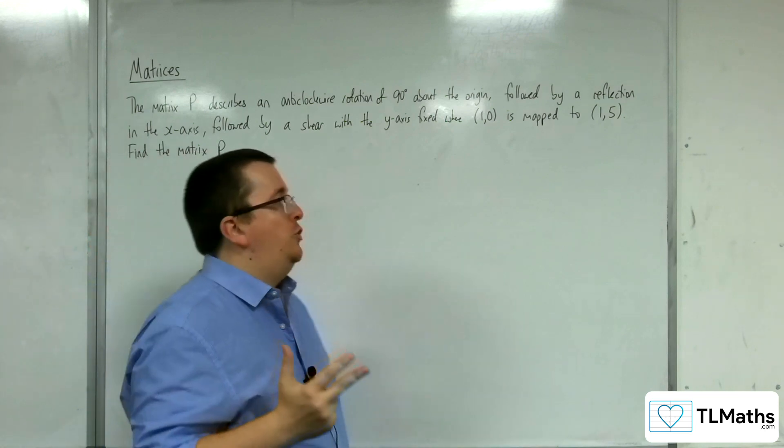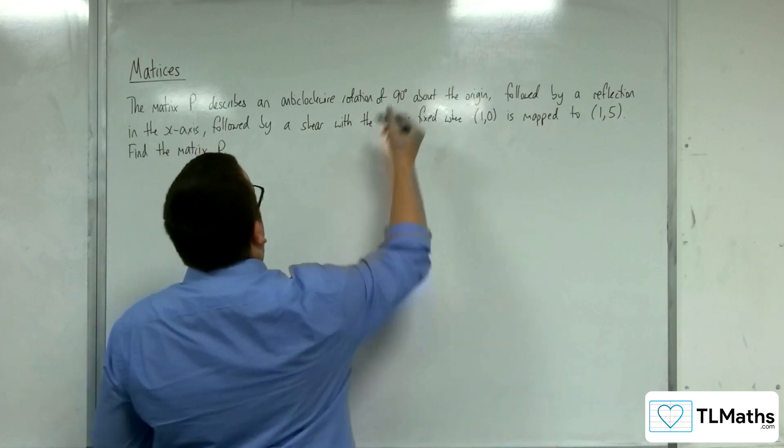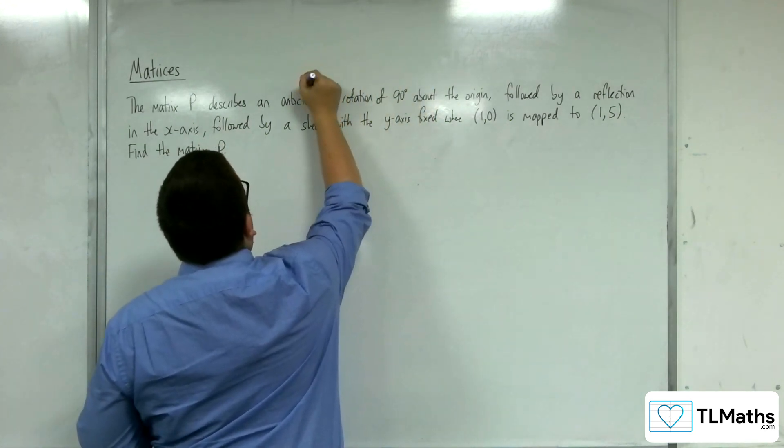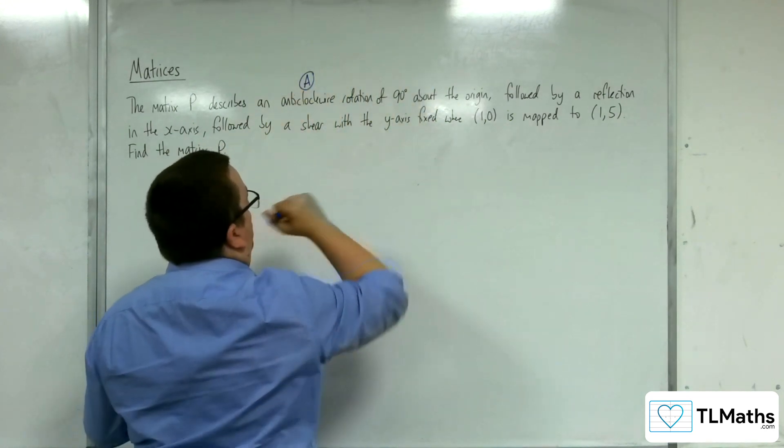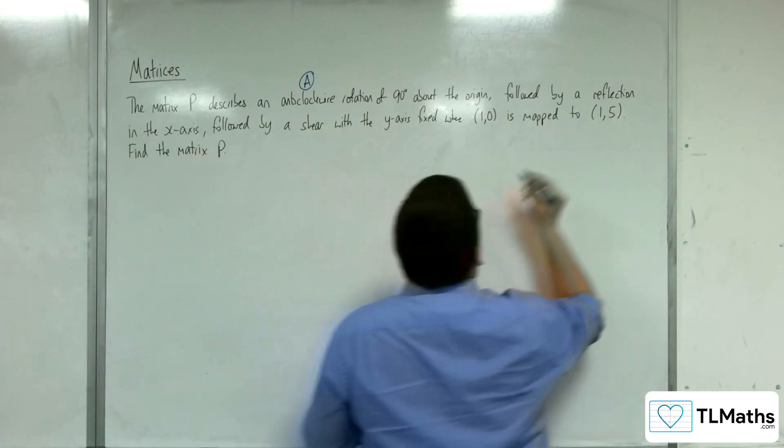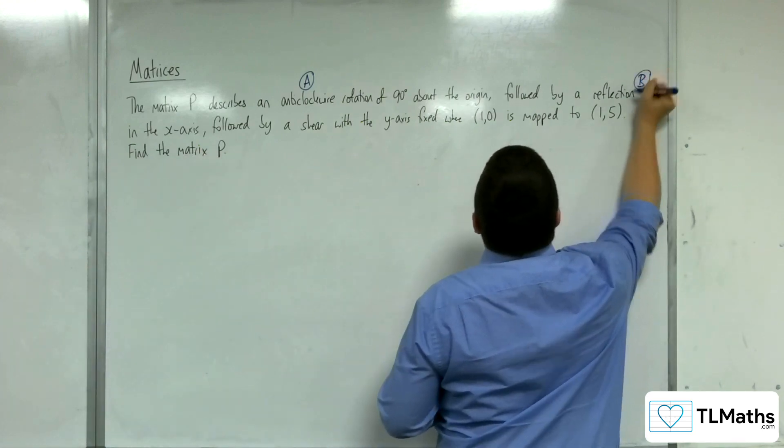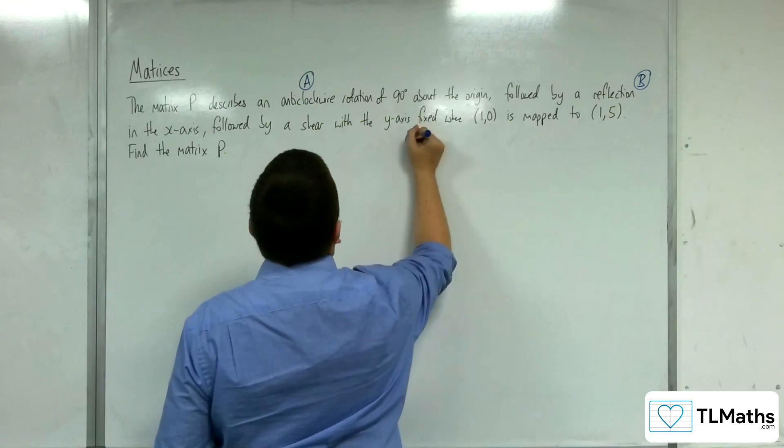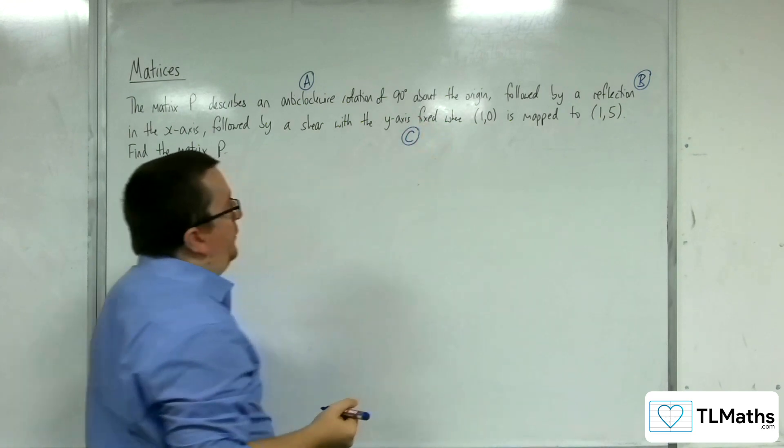So we have three transformations going on. We've got the rotation, let's call that A. We've got the reflection in the x-axis, let's call that B. And then we've got the shear, which we'll call C.